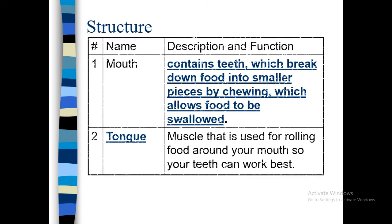Now we are going to start the structure. First, the mouth. It contains teeth which break down food into smaller pieces by chewing, which allows food to be swallowed. The mouth includes gums, teeth, tongue, and lips. There are also different types of teeth, though I am not going to describe the different types of teeth here.